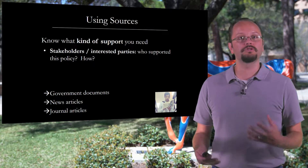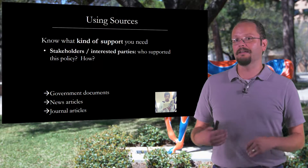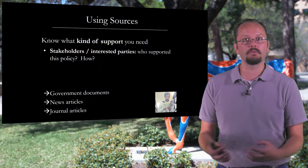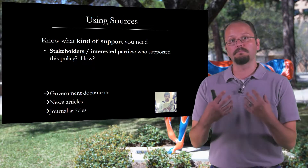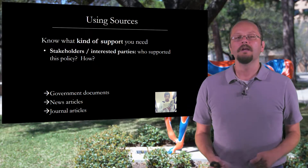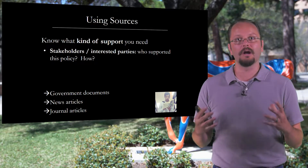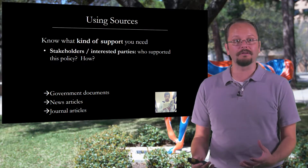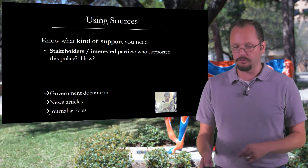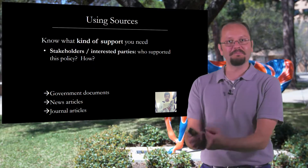If you're discussing stakeholders or interested parties, you'll be making claims about who supported this policy and how they supported it — whether they were legislators who argued for or against its passage, or community organizations that advocated for it. To support those claims, you're going to need government documents if you're talking about who voted and how. But you may also need news articles, which sometimes report the positions legislators or organizations take on a specific policy, and academic journal articles that discuss who's been supporting or opposing a specific kind of policy.